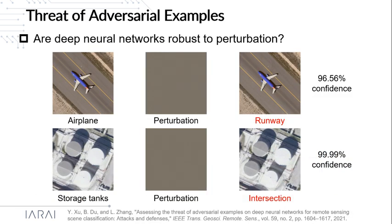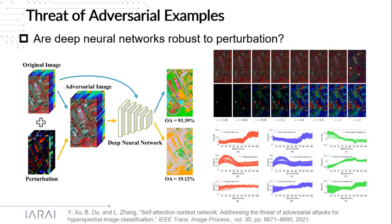In the remote sensing field, there also exists the threat of Adversarial Examples. We can successfully change the predicted category from airplane to runway with the Adversarial Attack. This phenomenon is not limited to the RGB domain; we can also find that Adversarial Attacks can significantly change the spectral characteristics of specific objects in the hyperspectral domain.